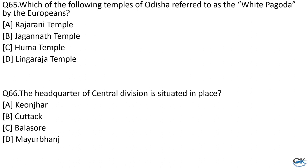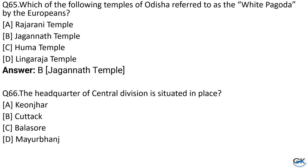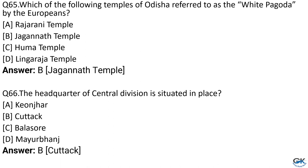Question No. 65: Which of the following temples of Odisha is referred to as the White Pagoda by Europeans? Option A: Rajarani Temple. Option B: Jagannath Temple. Option C: Huma Temple. Option D: Lingaraj Temple. The answer is Option B, Jagannath Temple. Question No. 66: The headquarters of the Central Division is situated in which place? Option B: Cuttack. The answer is Option B, Cuttack.